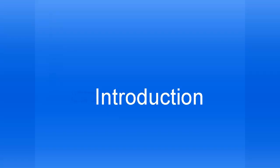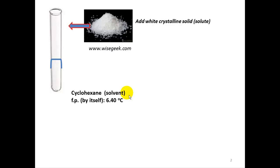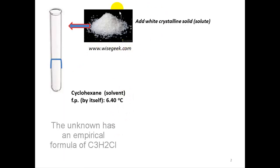In this experiment you're going to begin with a test tube with cyclohexane. This will be our solvent. The solvent cyclohexane by itself has a freezing point of about 6.4 degrees — that's from our textbook. We will add to that solvent some solute. This is your unknown, and your task in this lab is to figure out the molecular formula of this unknown.